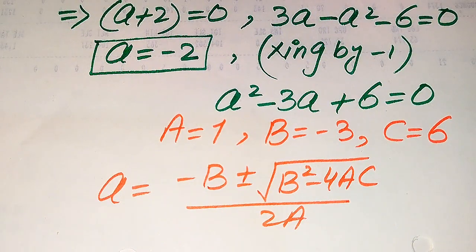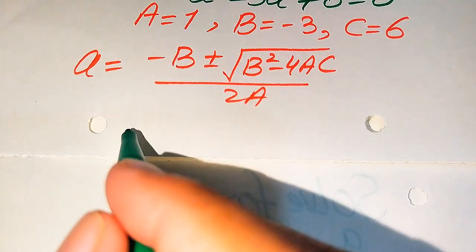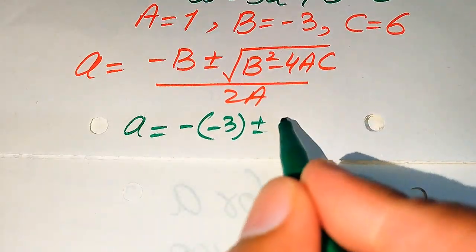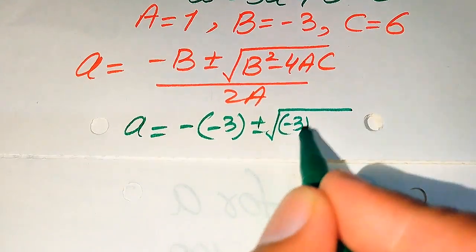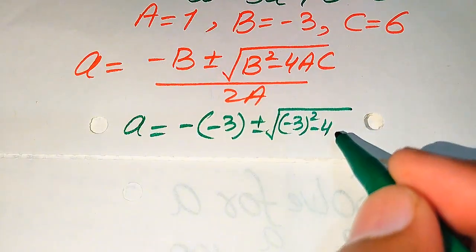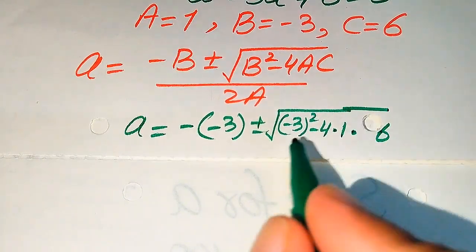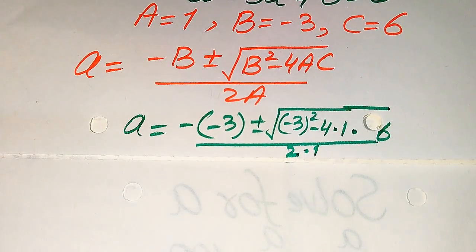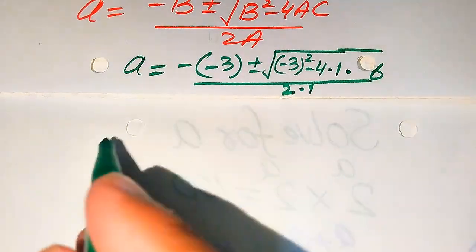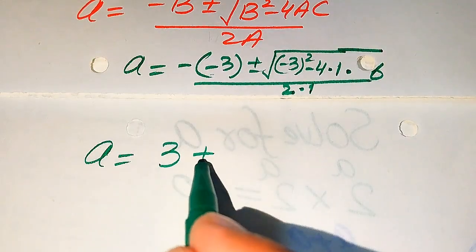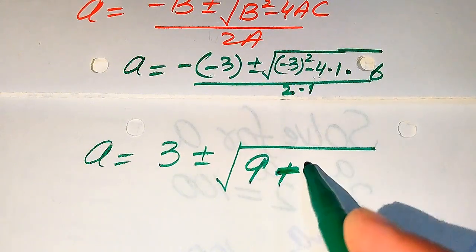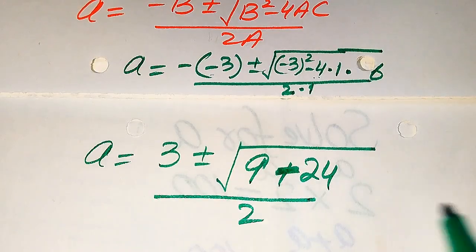Substituting the values: a equals negative (negative 3) plus or minus square root of (negative 3) squared minus 4 times 1 times 6, divided by 2 times 1. This simplifies to a equals 3 plus or minus square root of 9 minus 24, divided by 2.